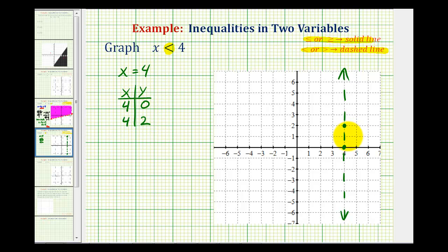But now we need to check to see if we should shade to the right of this line or to the left of this line. We should be able to figure this out pretty easily if we can read this correctly. It says x is less than 4. Well, x values are less than 4 to the left of this vertical line. So we'll shade the half plane to the left of this line or this region here.